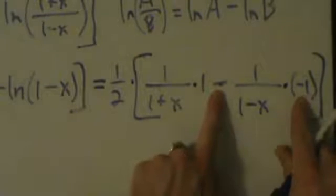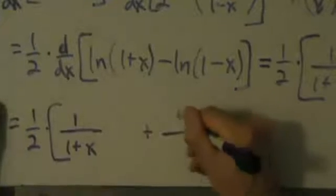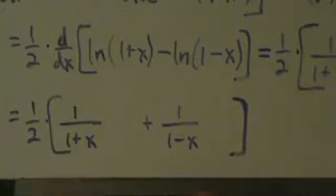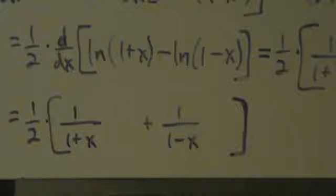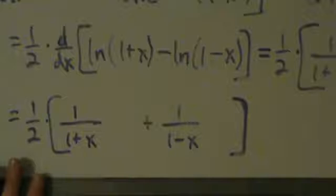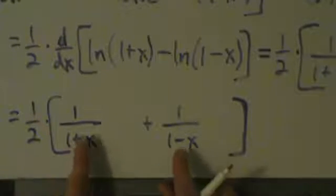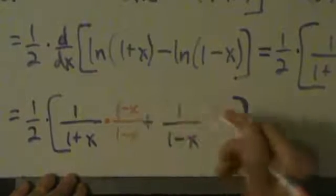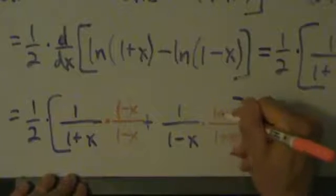Now let's simplify. We have 1/2 times [1 over (1+x) plus 1 over (1−x)]. We need a common denominator here. The common denominator — also the least common denominator — is (1+x)(1−x). So we multiply the first fraction by (1−x)/(1−x) and the second fraction by (1+x)/(1+x), giving us a common denominator.